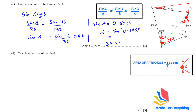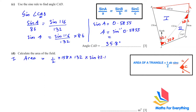We divide the field into two parts: area one and area two, then add them together. Area one = ½ × 158 × 132 × sin 42.1, which gives us 6991.2 square meters.